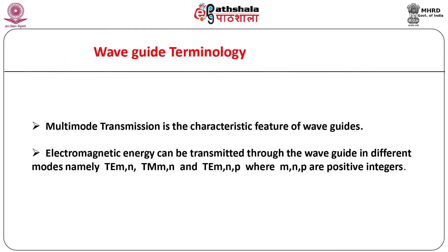For lossless propagation, alpha is zero. A non-zero value of beta implies a propagating wave, while a stationary wave is characterized by beta equal to zero. In general, gamma is complex and depends upon the frequency of the electromagnetic wave. Multimode transmission is the characteristic feature of waveguides. Electromagnetic energy can be transmitted through the waveguide in different modes, namely TE_MN, TM_MN, and TEM_MNP, where M, N, P are positive integers.